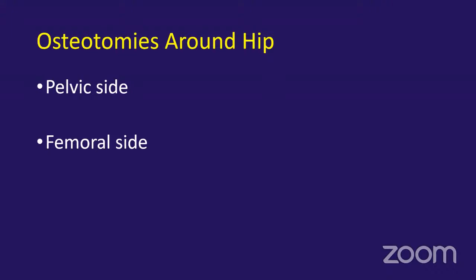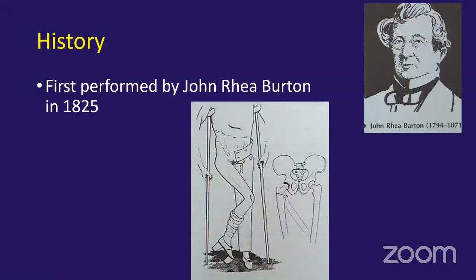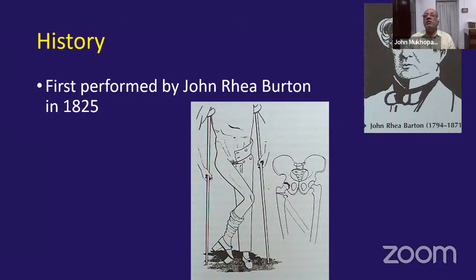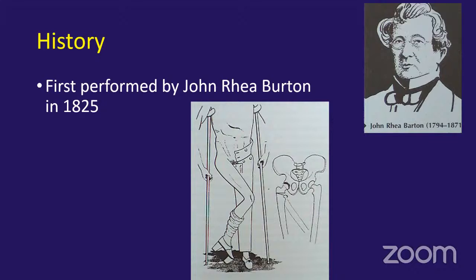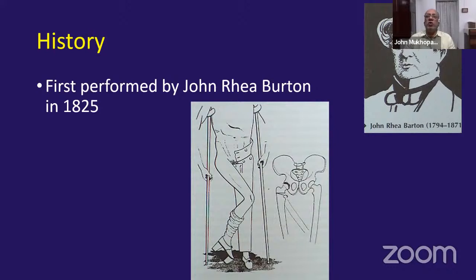For the hip, you can have osteotomies either above the hip on the pelvic side or below on the femoral side. Interestingly, the first known osteotomy was performed by John Rhea Burton, a surgeon in Pennsylvania, who used it to straighten a fixed, adducted, flexed, internally rotated hip. He did a subtrochanteric osteotomy and brought the femur into proper alignment, using that to work as a kind of arthroplasty allowing movement of the joint.